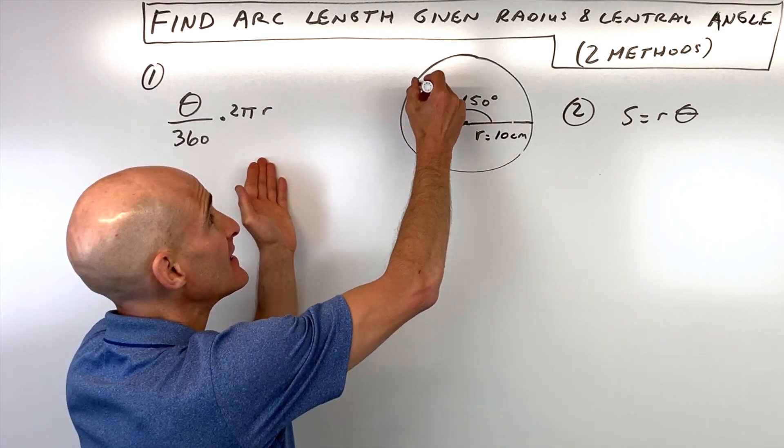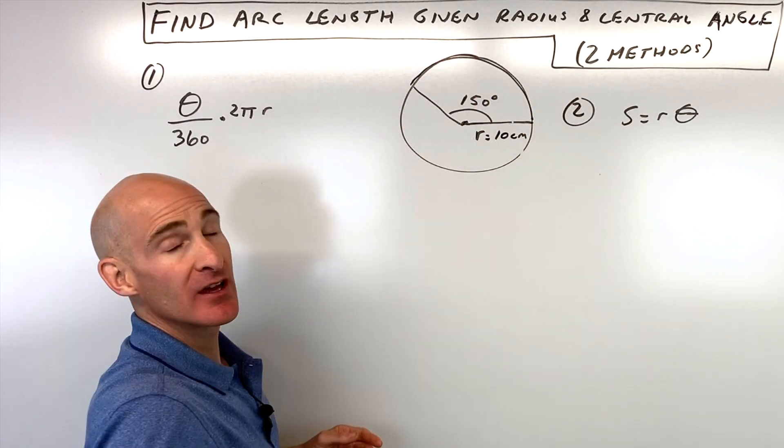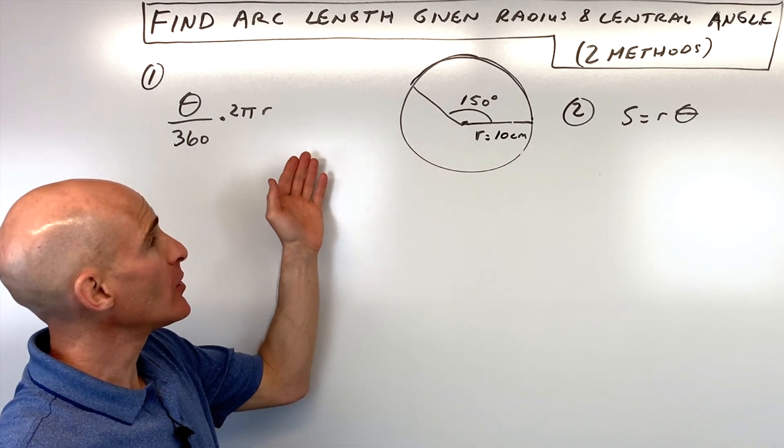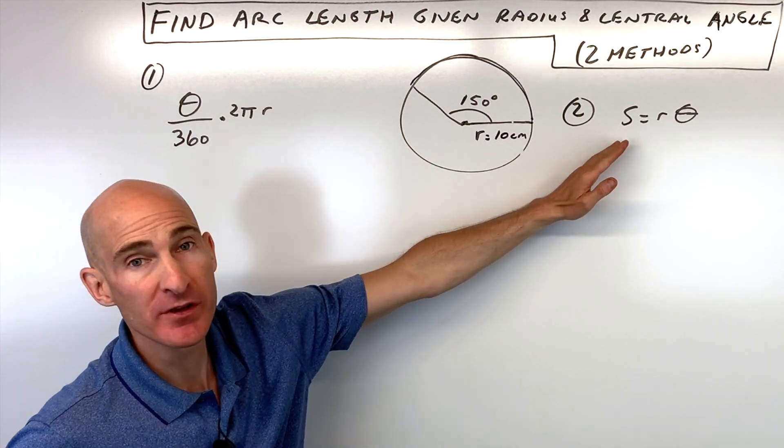I'm going to show you two different methods for finding the length of an arc when you're given the radius and the central angle.